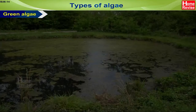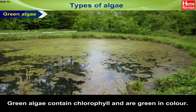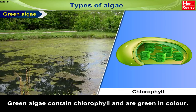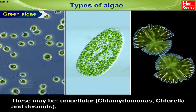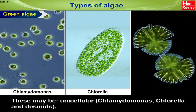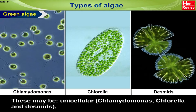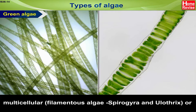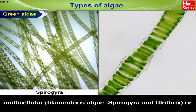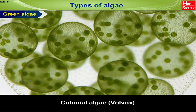Green Algae. Green algae contain chlorophyll and are green in color. These may be unicellular like Chlamydomonas, Chlorella and desmids; multicellular like filamentous algae, Spirogyra and Ulothrix; or colonial algae like Volvox.